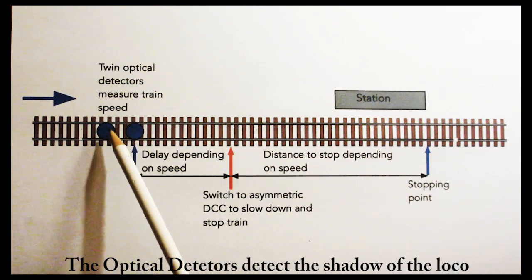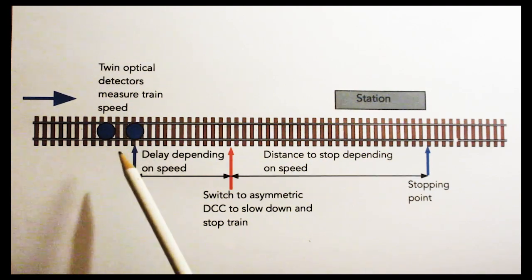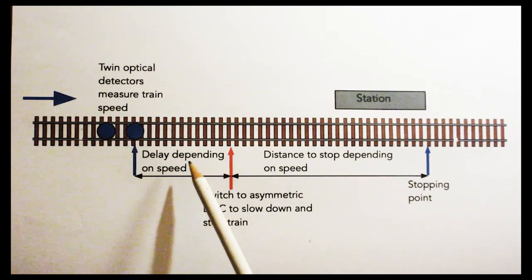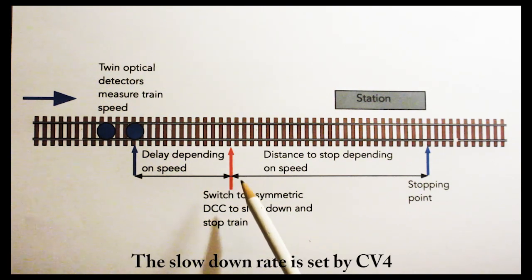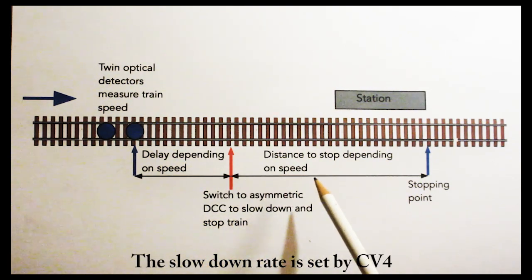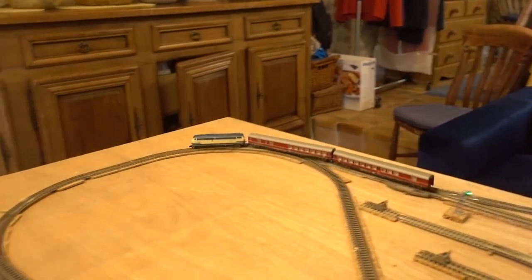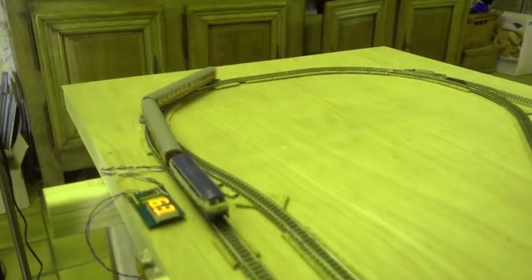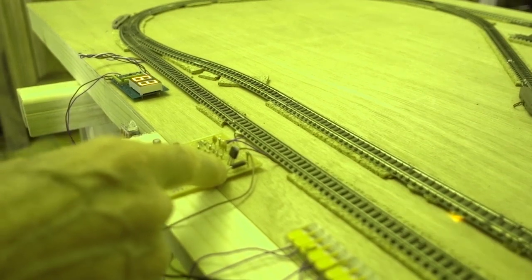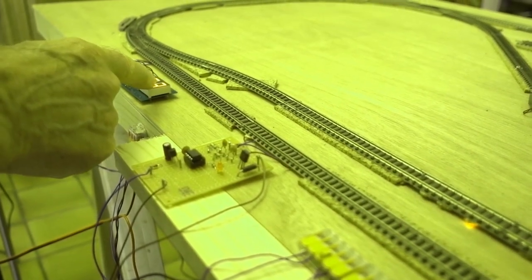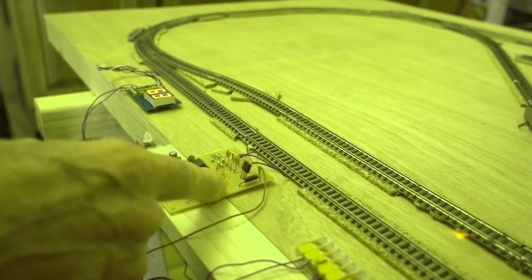Two optical detectors measure the speed of the train. From that speed the correct delay is calculated before the switch is made to asymmetric DCC, and the train slows down and stops in the station. At the trip point, the PIC measures the speed at which the train is going and calculates the delay. This LED is on during the delay.